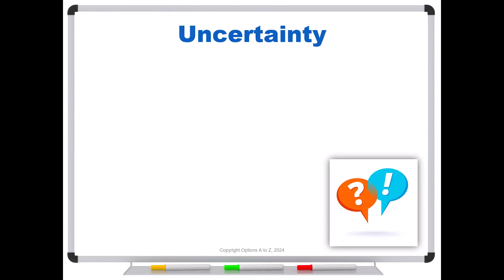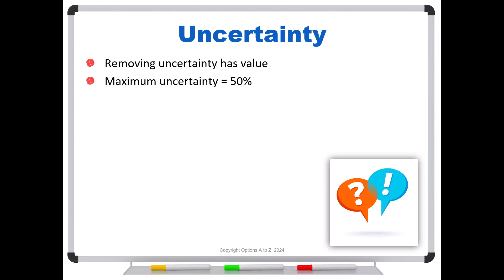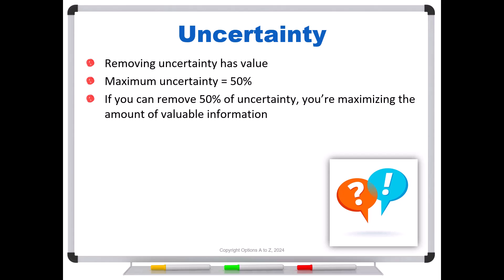So let's now talk a little bit about uncertainty. Removing uncertainty has value. What's the maximum uncertainty? 50% — think of it like a coin flip. That's the worst case of uncertainty that we can have. That's why it's funny when the weatherman tells you there's a 50% chance of rain today — that really tells you nothing, it's just the maximum uncertainty. If they were worth anything, they should lean a little bit to one direction or the other, tell me it's 49% or 51%. So if you can remove half of the uncertainty, you're maximizing the amount of valuable information, and that's really the trick to understanding which options convey the most value.